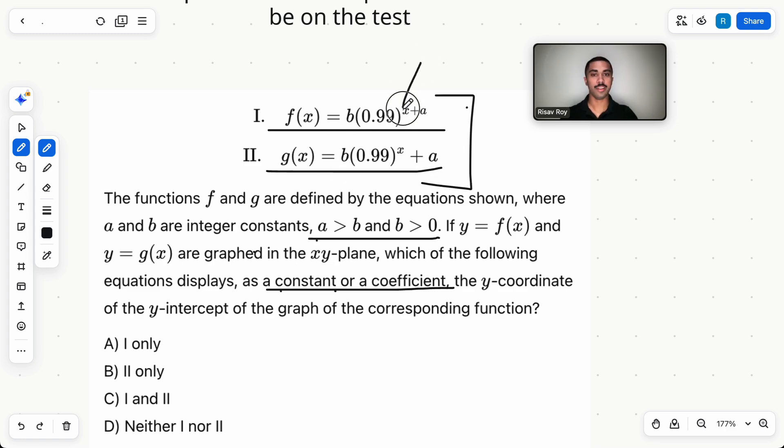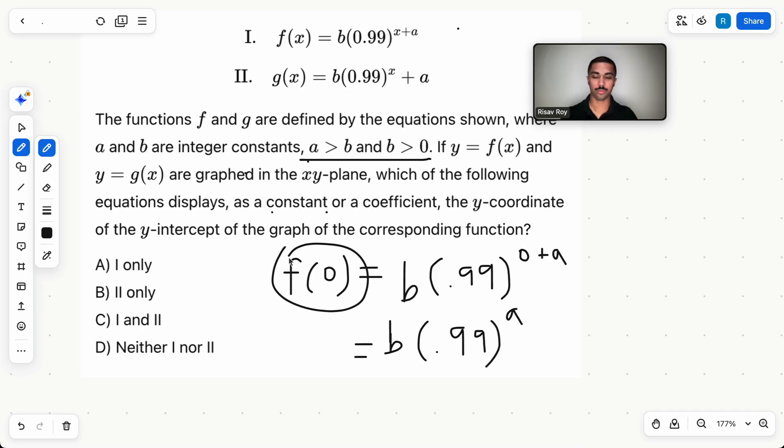So if we plug in zero right here, do we get b? That's what the first one is asking. If we plug in zero right here, do we get a or b? For f(0), which is this first equation, what we end up with is this, which is not b. It is not a constant or coefficient that is displayed. Let's move on to the second one.